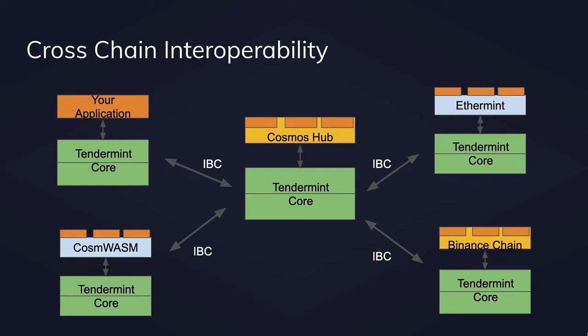The novelty of IBC is that two chains that don't know about each other can actually start communicating without having to pre-program code to communicate with them. This enables chains like Bitcoin and Ethereum, who don't know about each other, to communicate. If you're building a Cosmos-based chain, this will come out of the box and ready to go from day one. ETH 2.0 is also looking at it for their sharding design and for communication with other chains, and Substrate is also looking at using it for substrate-to-substrate communication.